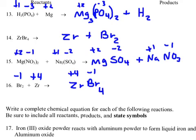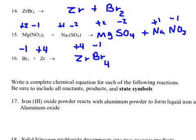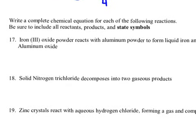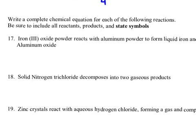This next part: I've written out what happens using words and I'm asking you to write this as a chemical formula using chemical symbols and state symbols. Iron three oxide — that 3 tells me this is a plus 3 ion. Fe is plus 3, oxide is minus 2, so swap: it's a two-to-three ratio. I was told it's a powder — powders are solids — so I put a state symbol S underneath it. It reacts with aluminum powder, which is also a solid.